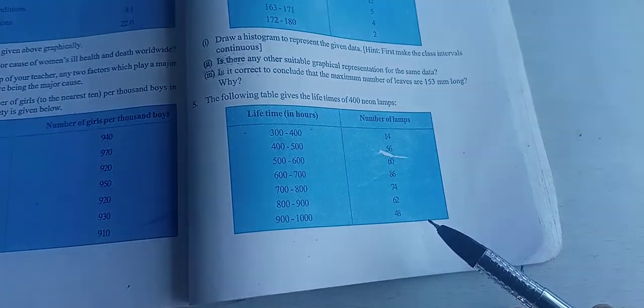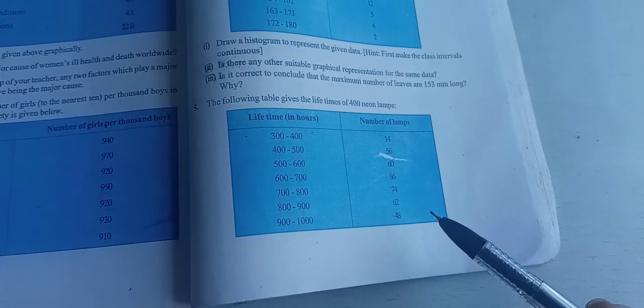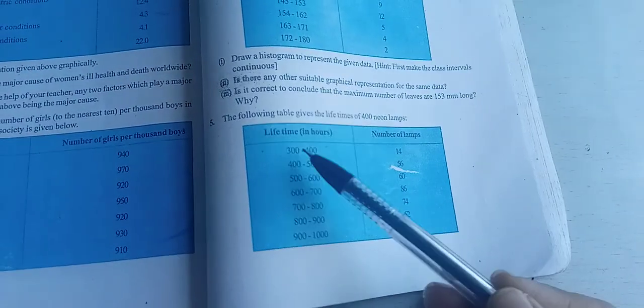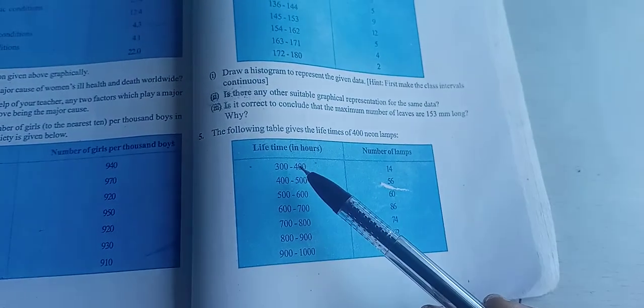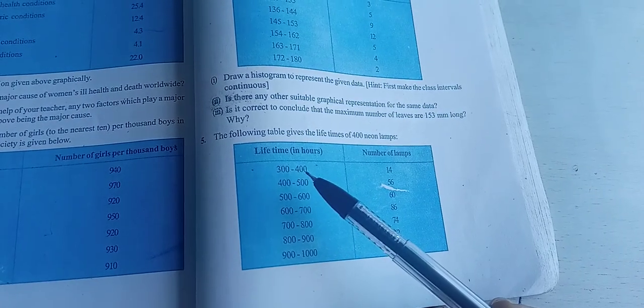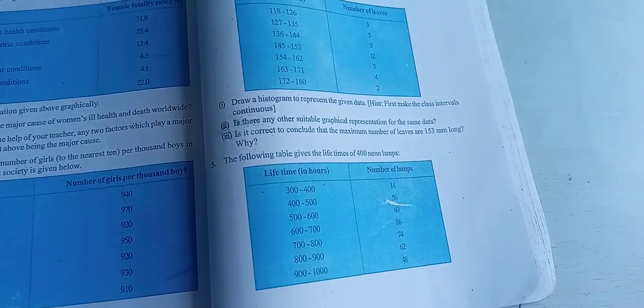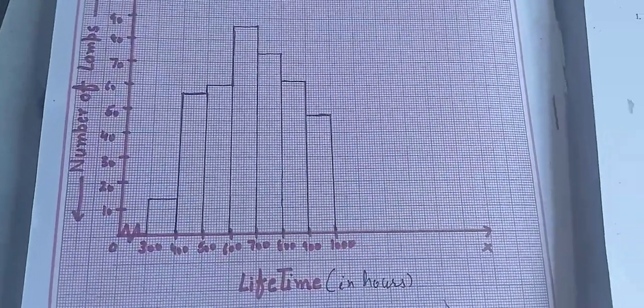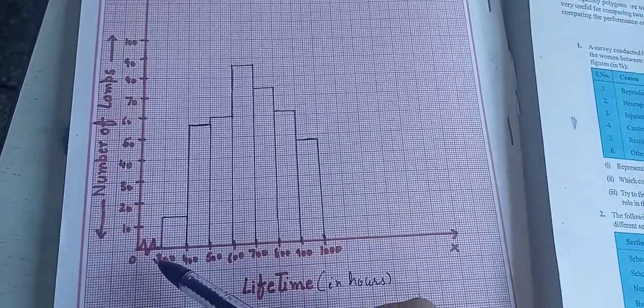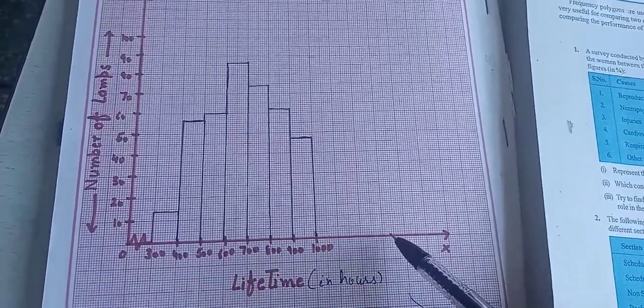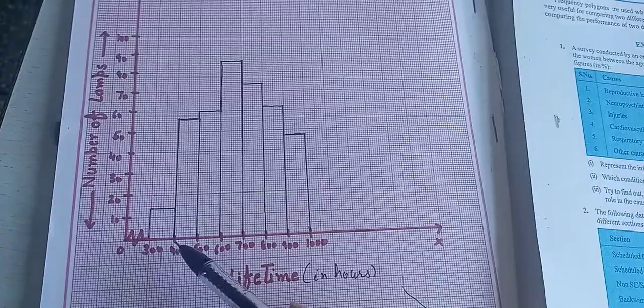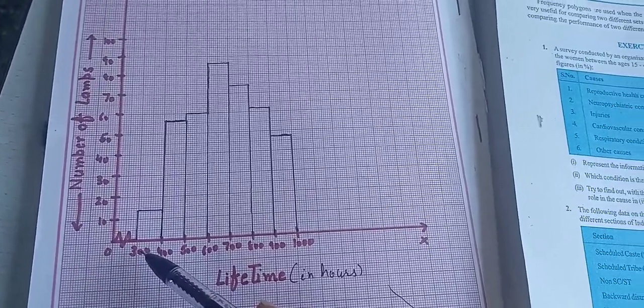So this you have to represent on graph. Now first of all just check, the table is starting from 300. So when we will start making the graph, what we have to do? We have to use kink. Now just see, this way you will draw the graph. We will use the kink because the data is starting from 300.